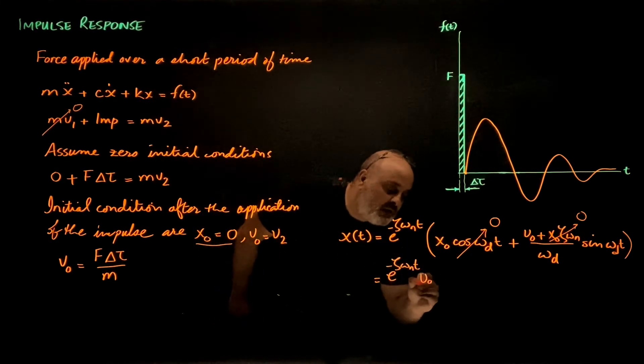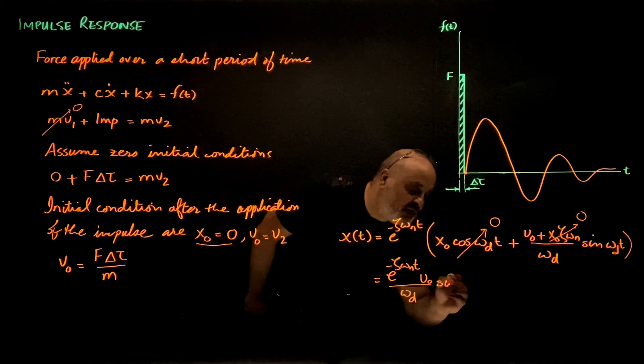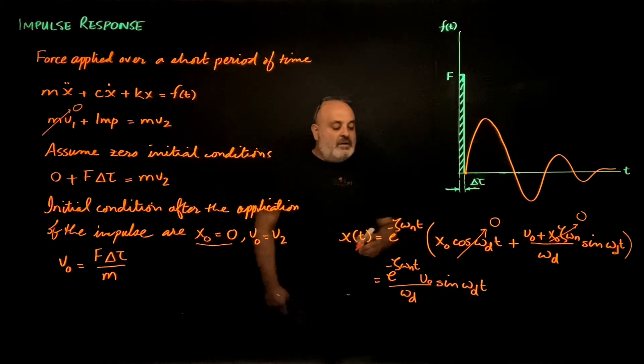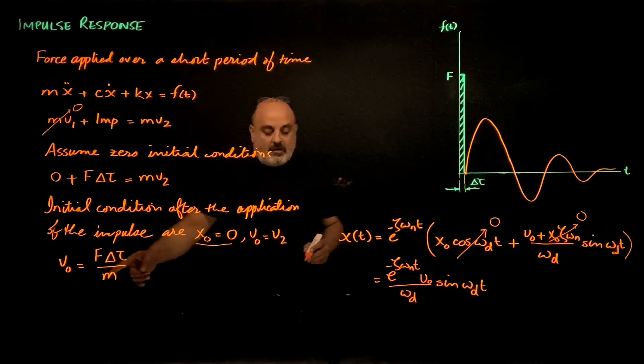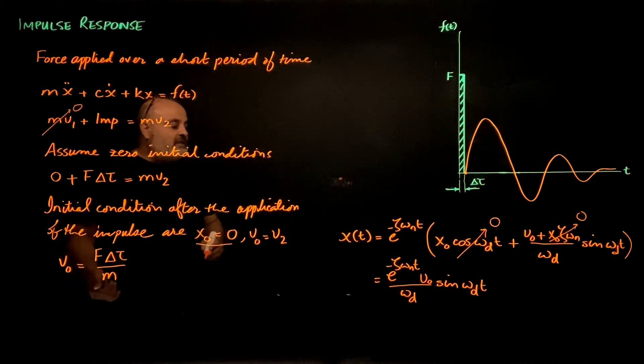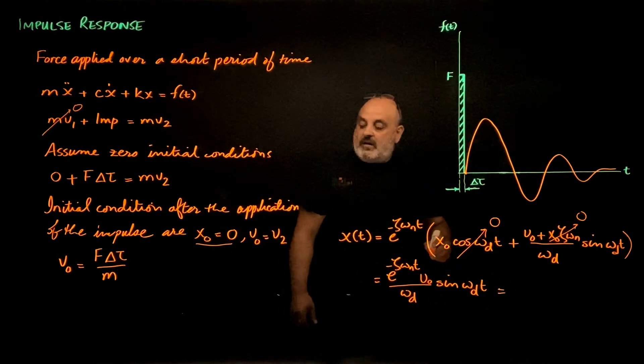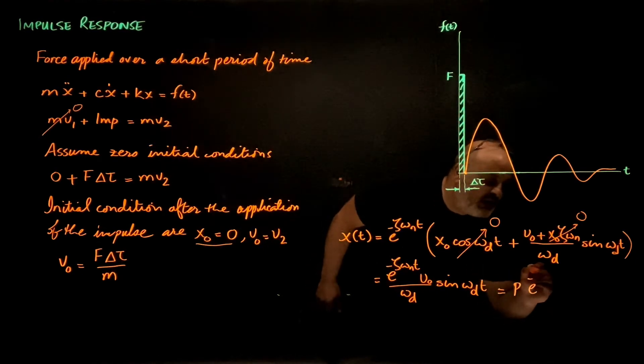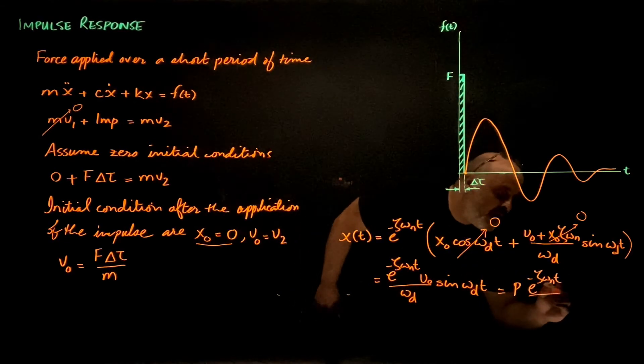Now if v0 is the initial condition determined from the impulse, then I can write this also as P times e to negative zeta omega n t divided by m omega d sine omega d t, where P is the impulse f times delta tau.